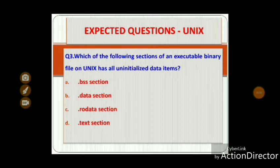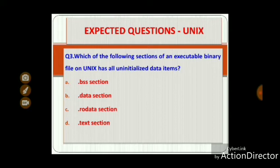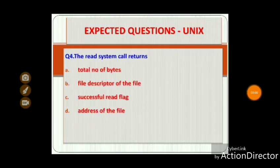Question 3: Which one of the following sections of an executable binary file on Unix has all uninitialized data items? Option A: .bss section, Option B: .data section, Option C: .rodata section, Option D: .text. The correct answer is Option A — the .bss section.